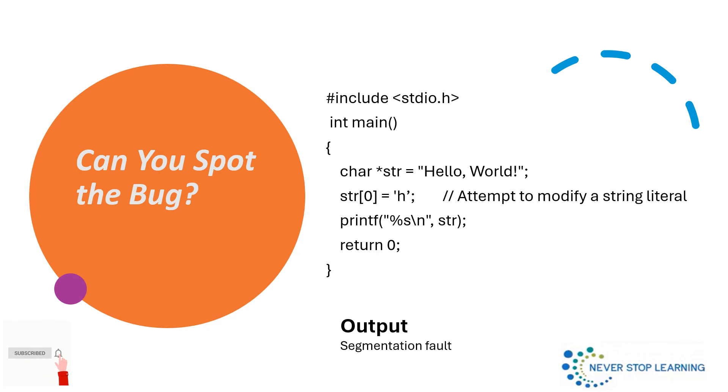Let's break it down. The program attempts to modify the first character of a string literal, but there is a catch. Here if you can see, str[0] is equal to small h is what we want to do.